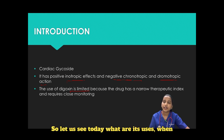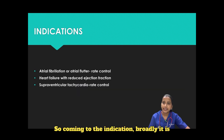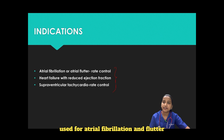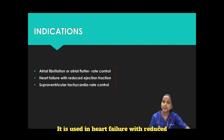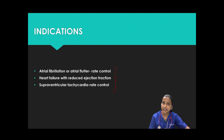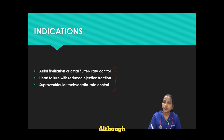Today we will see what are its uses, when it is used, what is the dose, and what are the adverse effects to be monitored. Coming to the indications, broadly it is used for atrial fibrillation and flutter rate control. It is used in heart failure with reduced ejection fraction and in supraventricular tachycardias for rate control.